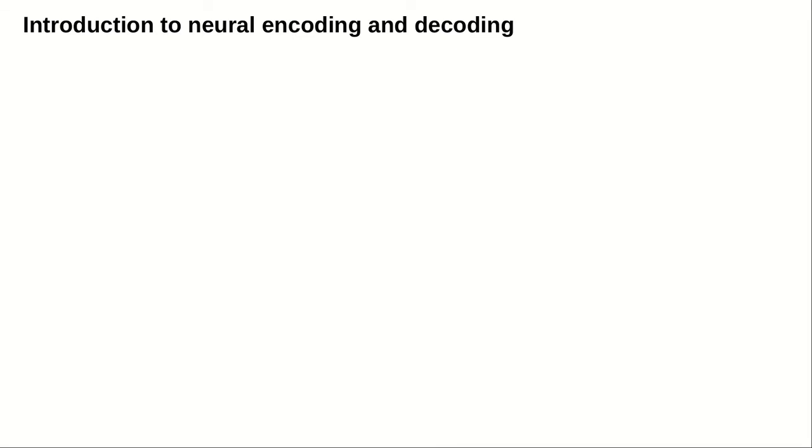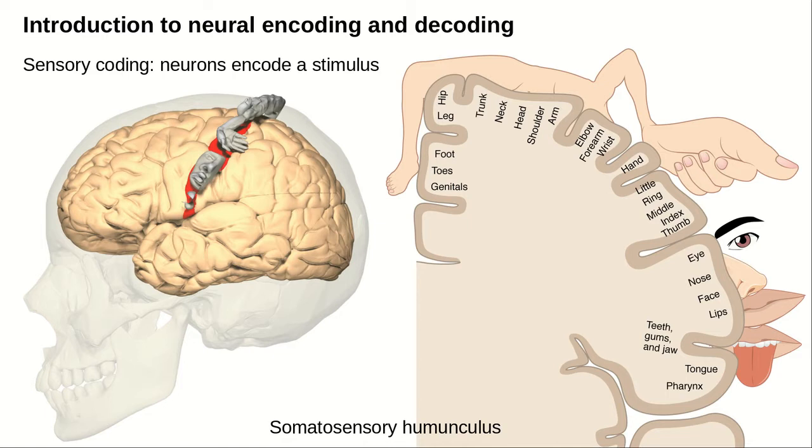An introduction to neural encoding and decoding. The simplest idea of neural encoding is how sensory neurons encode a stimulus. For example, there is a region of your brain called the somatosensory cortex that is across the top of your head. Neurons in a particular location of the somatosensory cortex tend to become active when you touch something with the tip of your right forefinger.